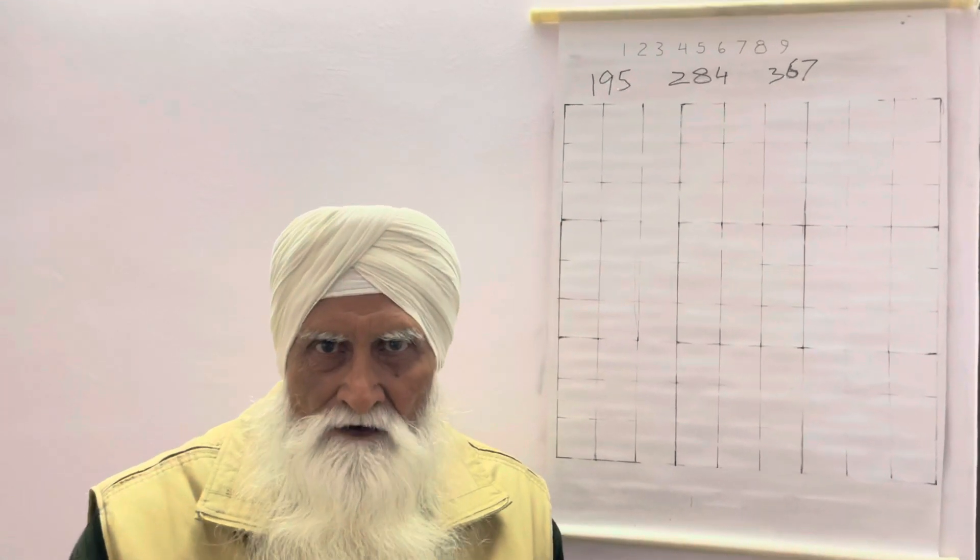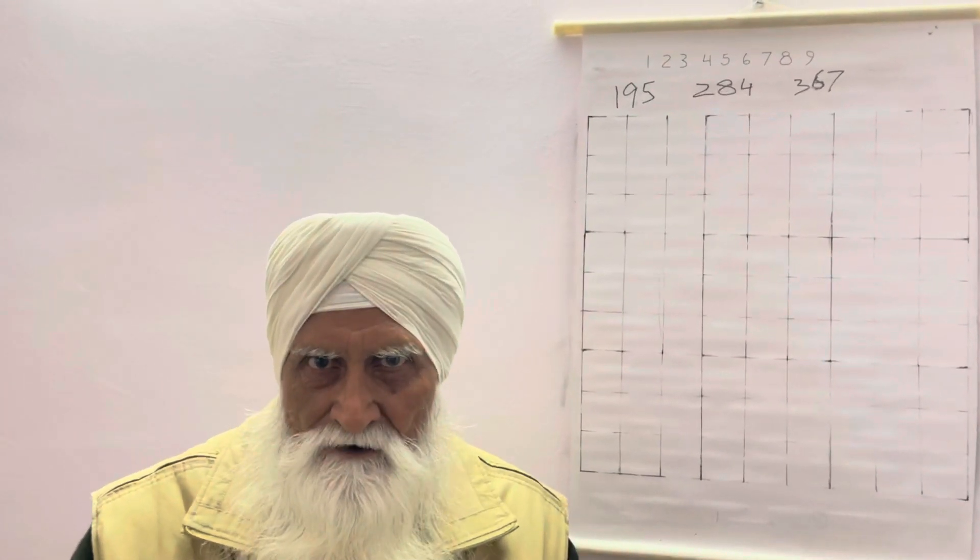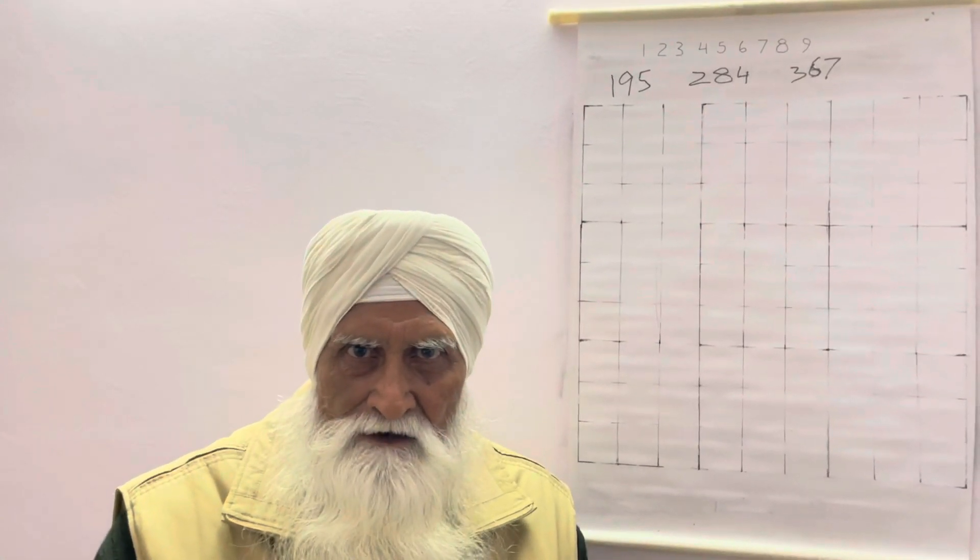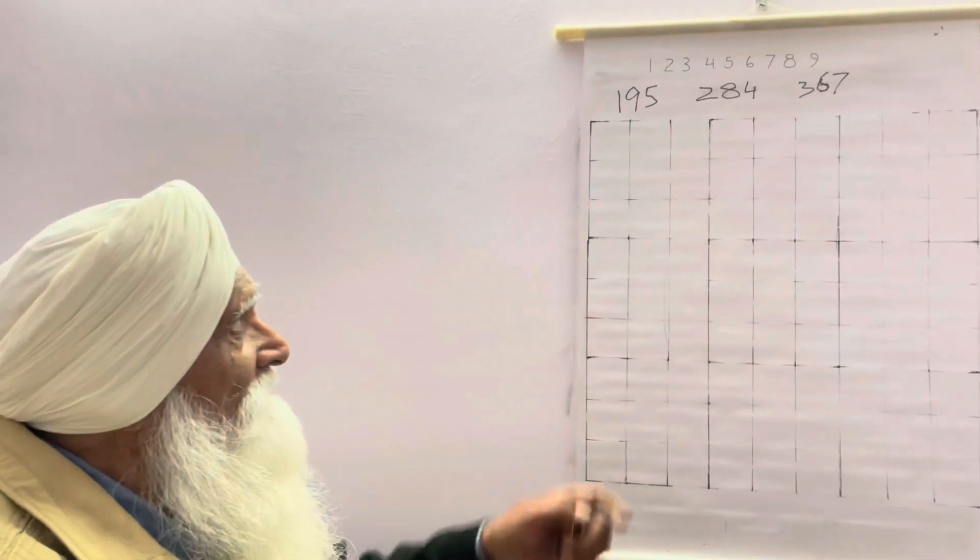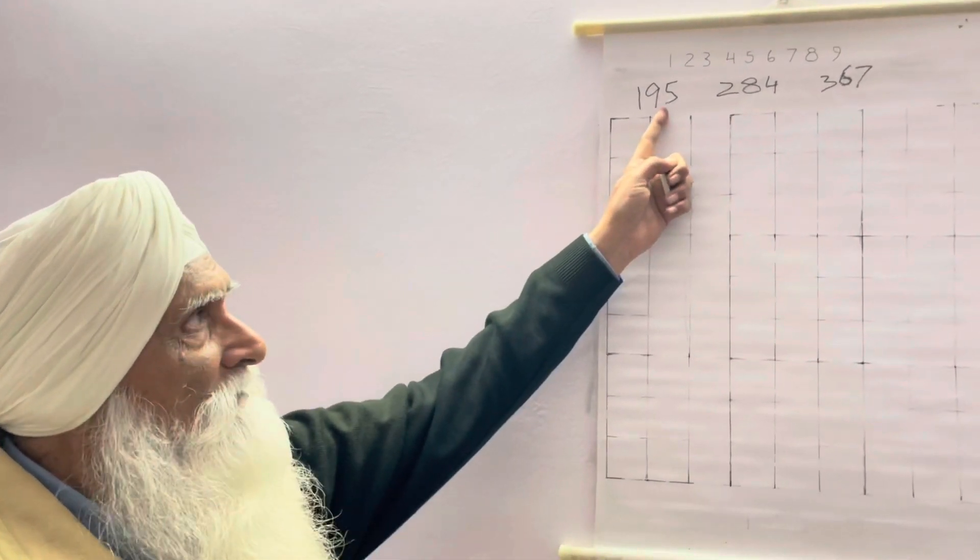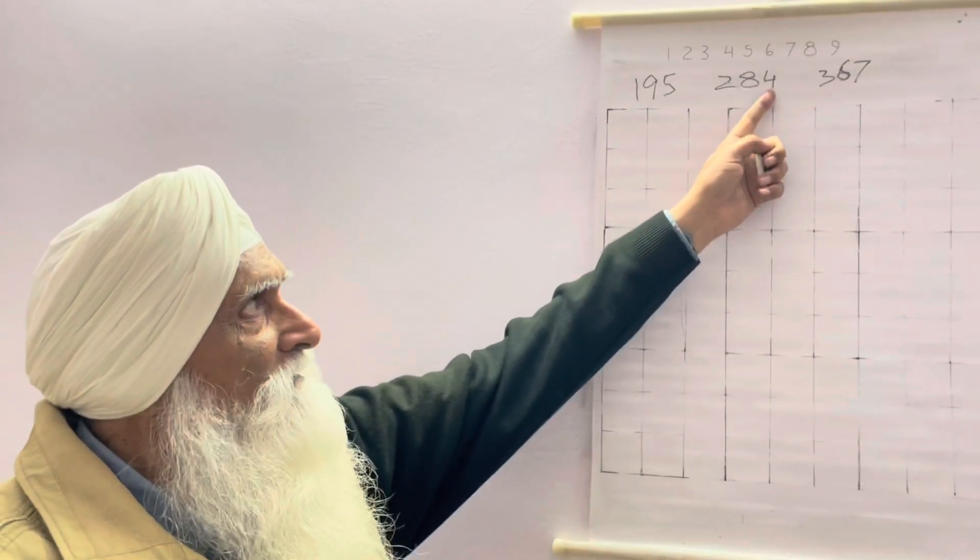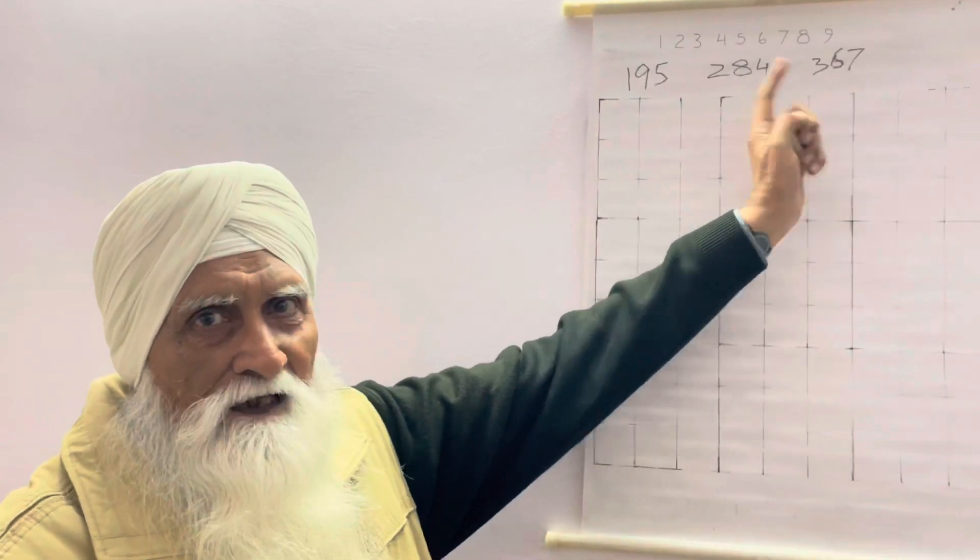What we do, we divide numbers 1 to 9 into 3 groups. We can select any random numbers for a group. I have selected 1, 9, 5 for group 1; 2, 8, 4 for group 2; and 3, 6, 7 for group 3.